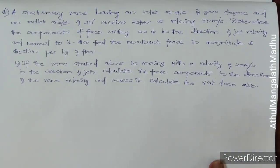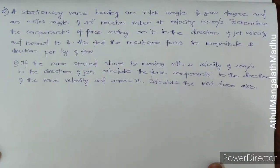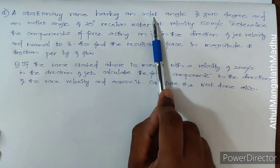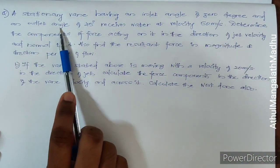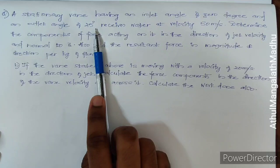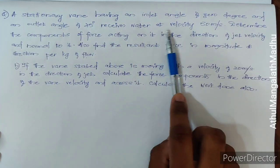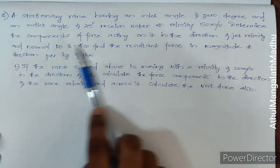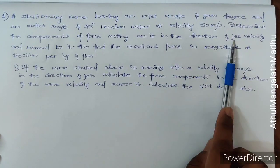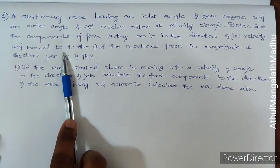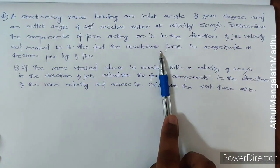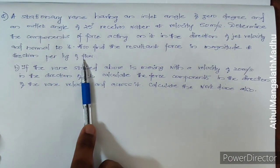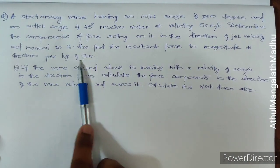Hello all, we will be doing a numerical right now. I will read the question. A stationary vane having an inlet angle of 0 degree and an outlet angle of 25 degree receives water at a velocity of 50 meter per second. Determine the components of force acting in the direction of jet velocity and normal to it. Also find the resultant force in magnitude and direction per kilogram of mass of the flow.